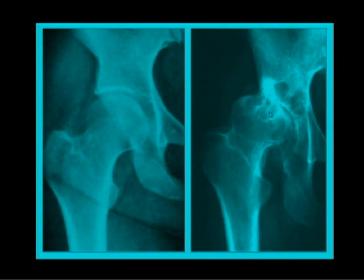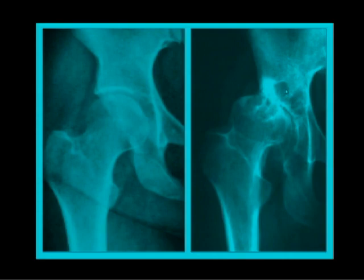The x-ray on the right is a patient with severe arthritis in the hip. There are quite a few changes noted: you can see the ball has sort of moved up in the socket, there's bone on bone, and there are changes in the bone where some areas have become sclerotic or hard from the two bones rubbing together. This patient has also developed some cysts in the bone from the two bones rubbing together.